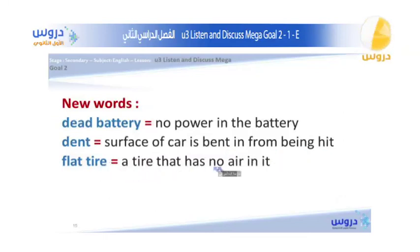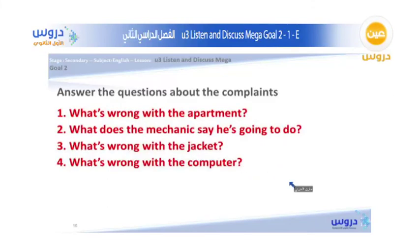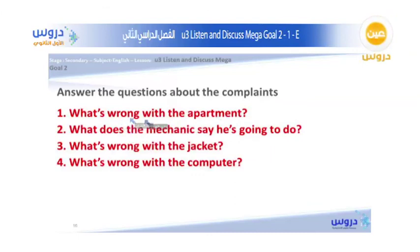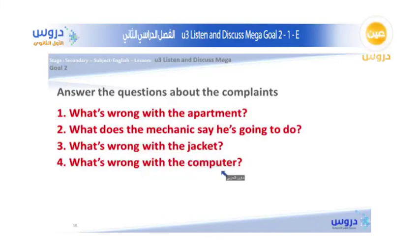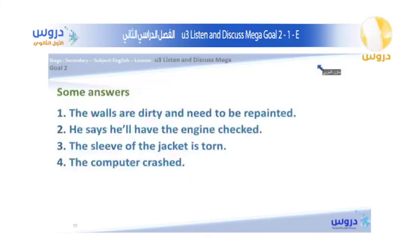Now let's answer the review questions from the scenarios. What was wrong with the apartment? The walls were not clean — they were filthy. What does the mechanic say he will do? He will check the engine again. What was wrong with the jacket? The sleeve was torn. What was wrong with the computer? It crashed. The answers: walls are dirty and need repainting; the mechanic will have the engine checked; the jacket sleeve was torn; and the computer crashed.